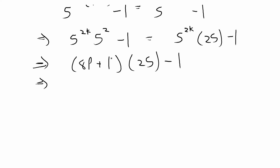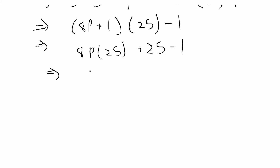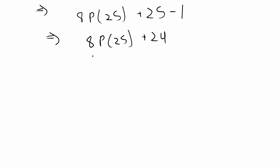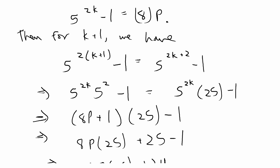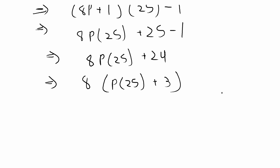Distributing the 25 into the parentheses gives us 8 times p times 25 plus 25 minus 1, so that's 8 times p times 25 plus 24. We already know 24 is divisible by 8 — that was the base case — so we can factor out an 8 to get 8 times (25p plus 3). We've shown that for k plus 1 we also have an integer times 8.